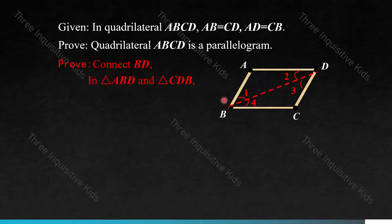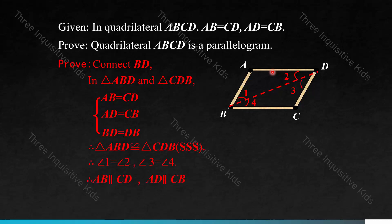In triangles ABD and CDB: AB equals CD, AD equals CB, and BD equals DB. Therefore these two triangles are congruent through SSS — side, side, side. Therefore angles one and two are equivalent and so are angles three and four. We also know that AB and CD are parallel and AD and CB are parallel. Therefore quadrilateral ABCD is indeed a parallelogram.